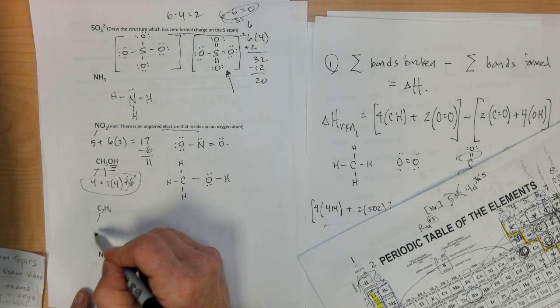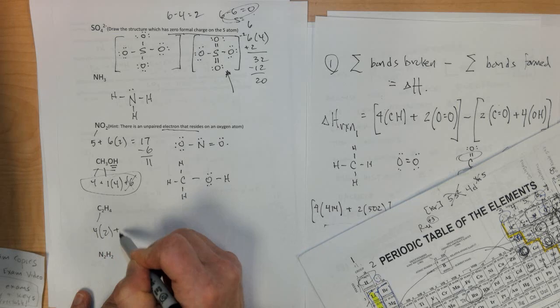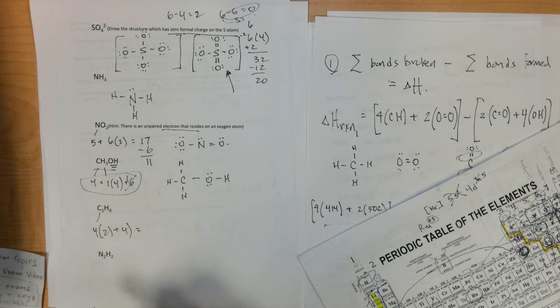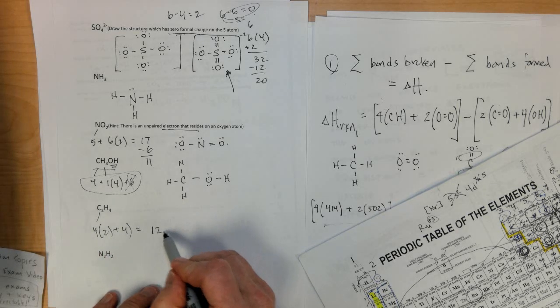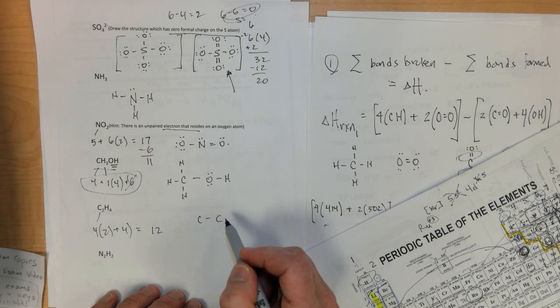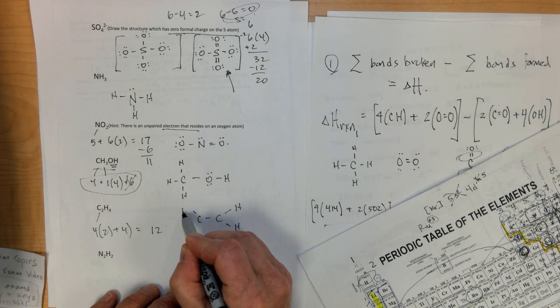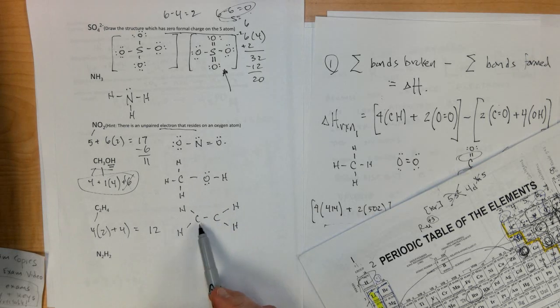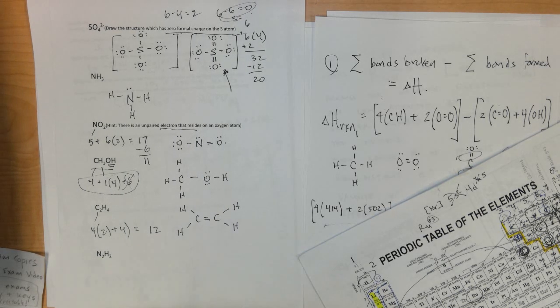Lewis electron dot structure. 4 here times 2 is 8. Plus 4 more. Ends up being 12 electrons. Carbons bonded to the carbon. And then if you have 4 hydrogens. 2 here. And 2 here. You end up not having enough electrons to complete the octet. But if you try a double bond. Now you satisfy the octet rule.